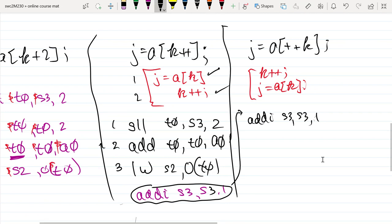And then, now that I've done my k plus plus, I need to access that value. And so that j equals a sub k is going to look like what we've seen, S-L-L, it's going to look like what we've seen before.